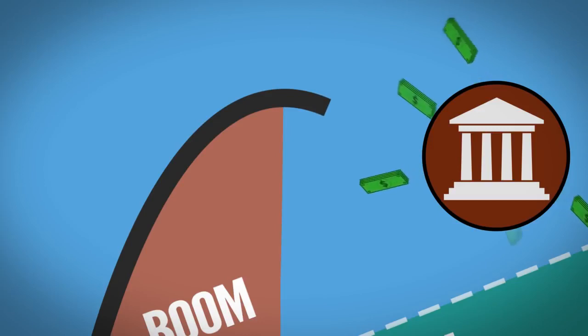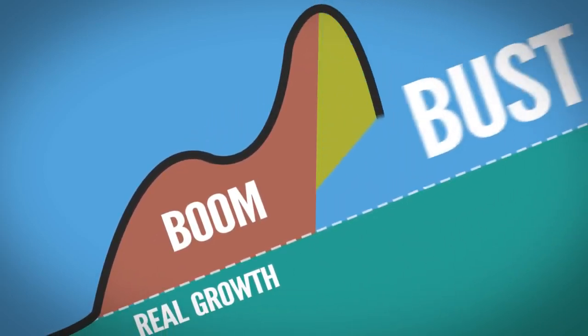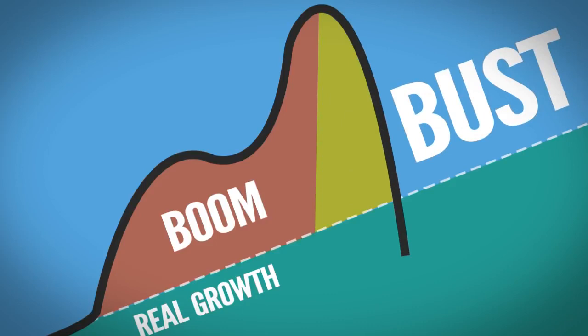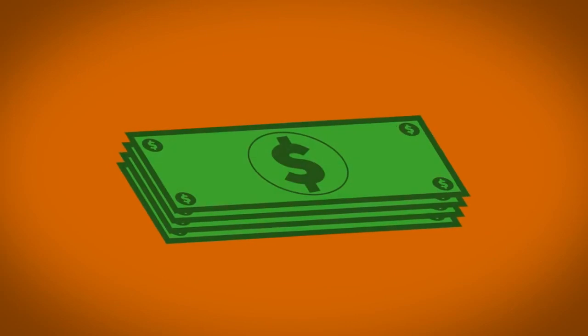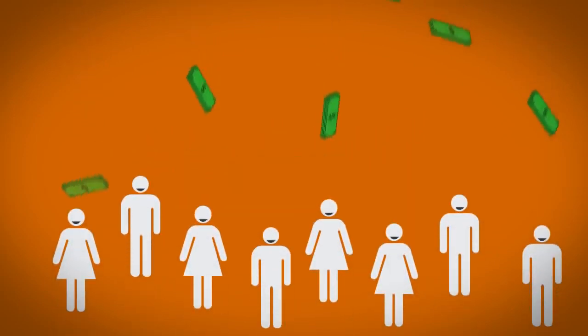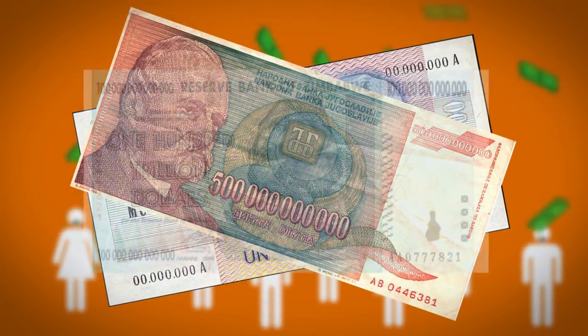Instead, they usually try to create more money and lower interest rates even further. This just adds fuel to the fire and makes the crash that much worse. Think about it: if all we needed to be wealthy was paper with numbers on it, we could solve everyone's economic problems just by turning on a printing press. But governments have been trying that throughout history. It doesn't work.